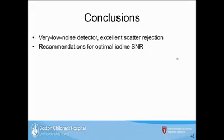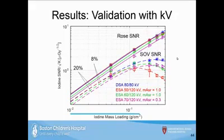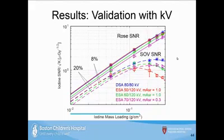Addressing a question about the bottom blue line on the iodine SNR figure: the sum-of-variance SNR incorporates the noise of the iodine region, whereas the Rose SNR does not. As iodine mass loading increases, the sum-of-variance SNR starts to fall off — which explains why that lower line degrades with increasing iodine concentration.